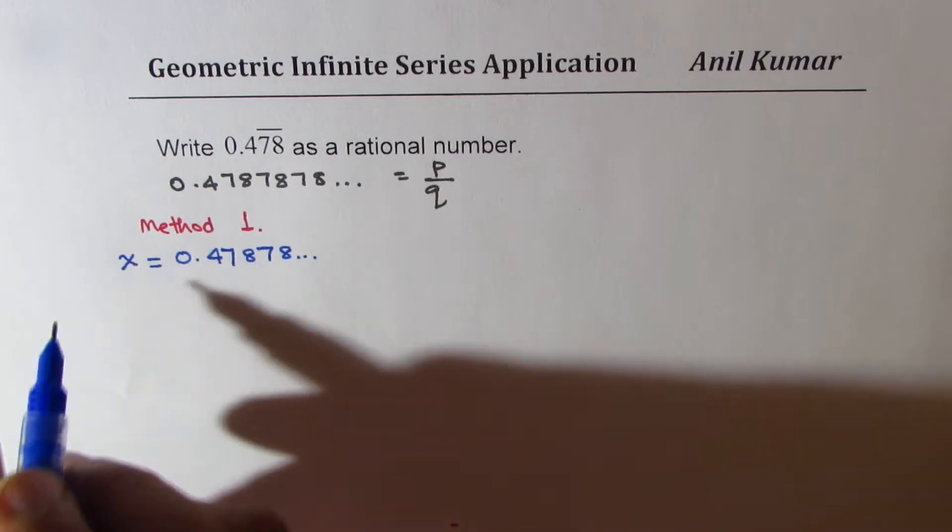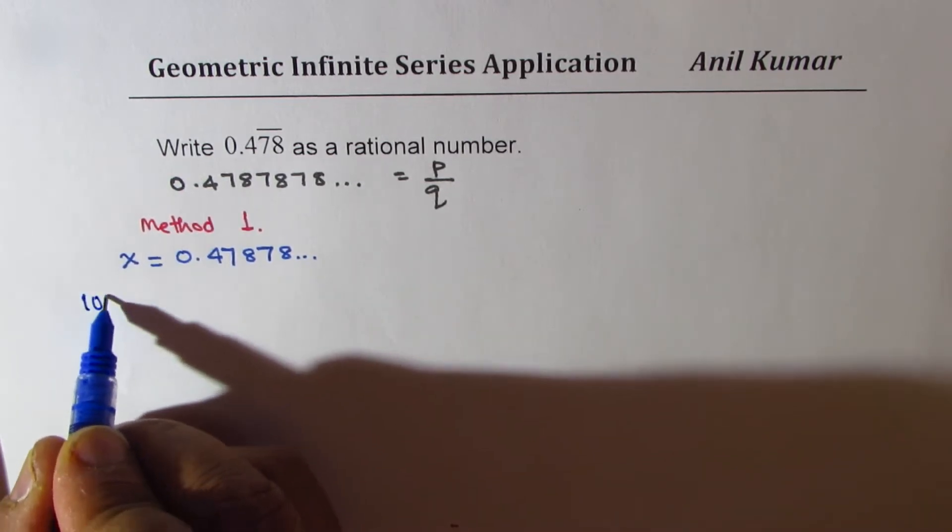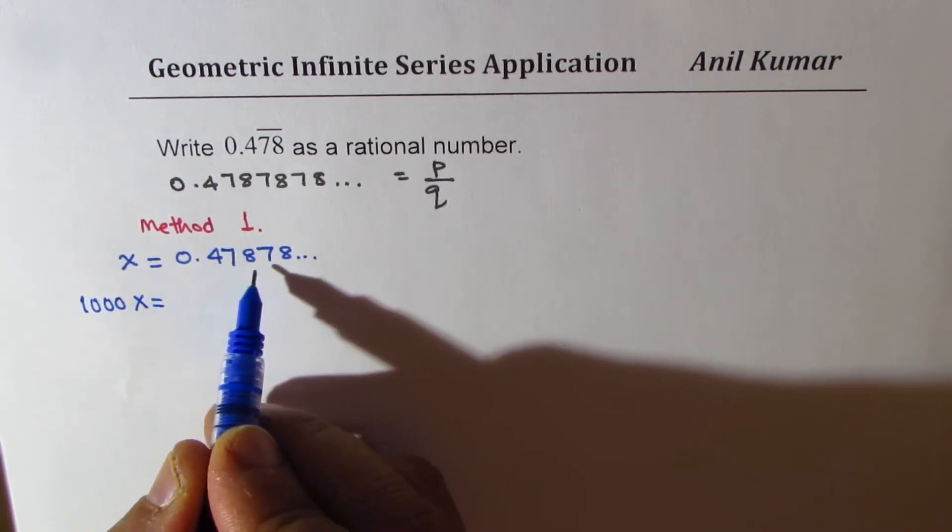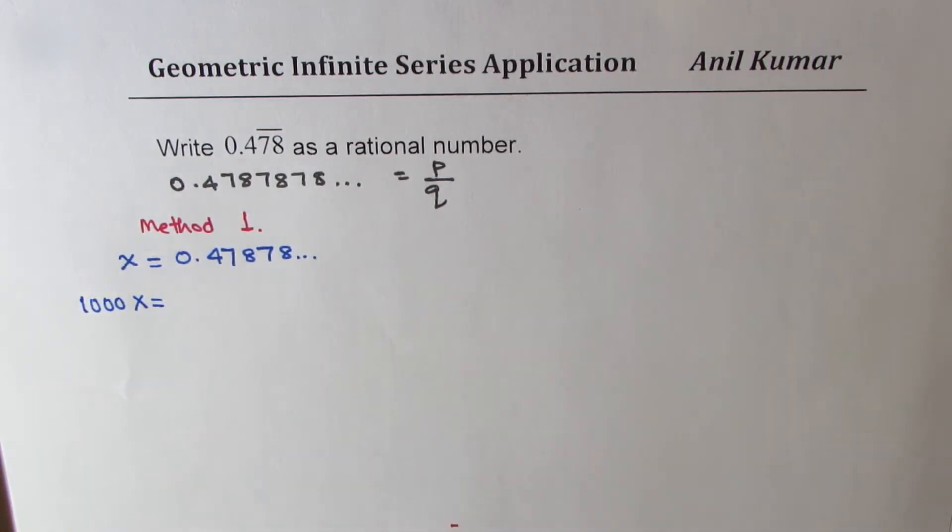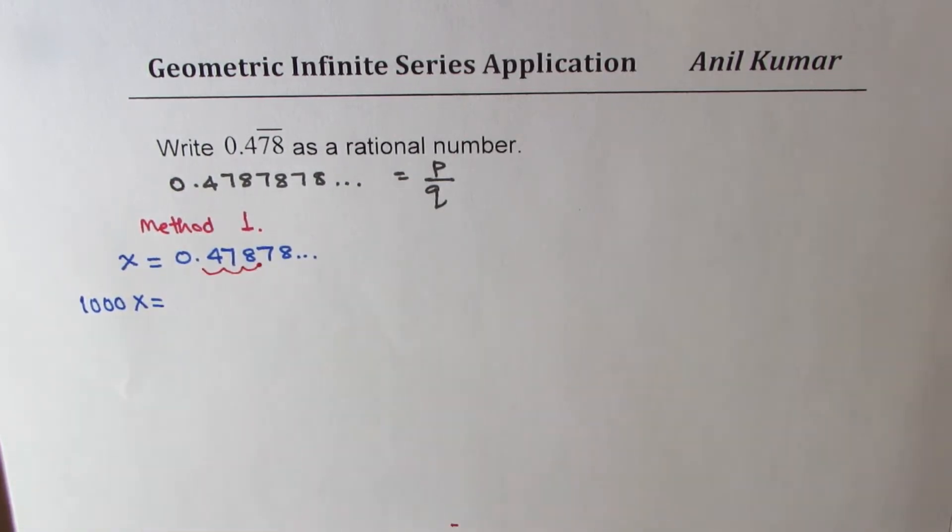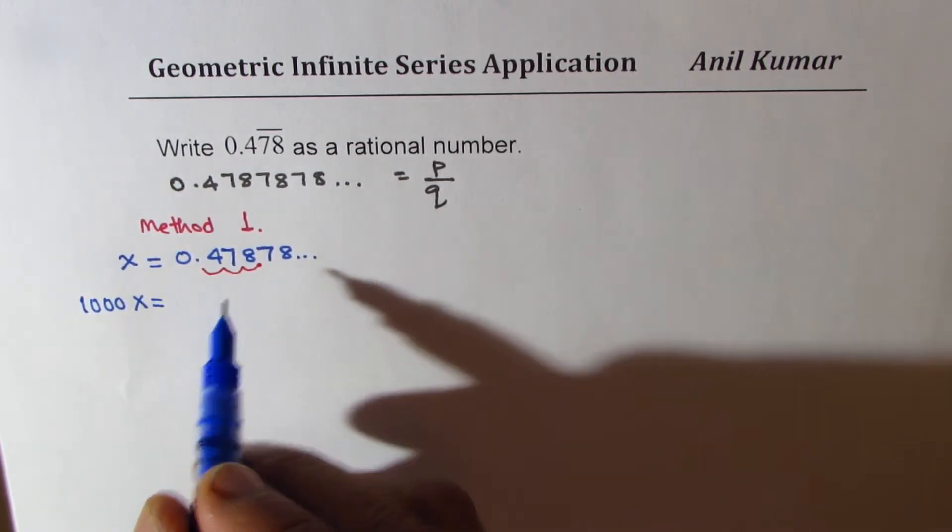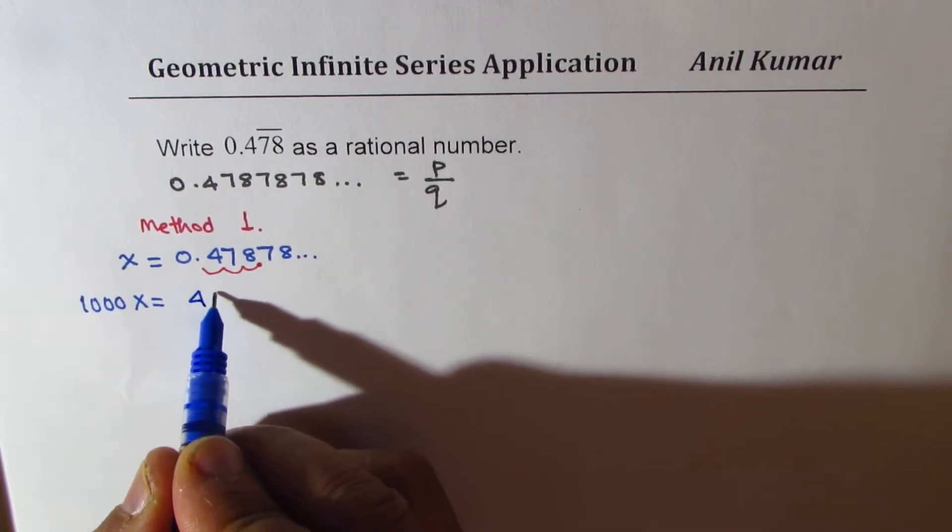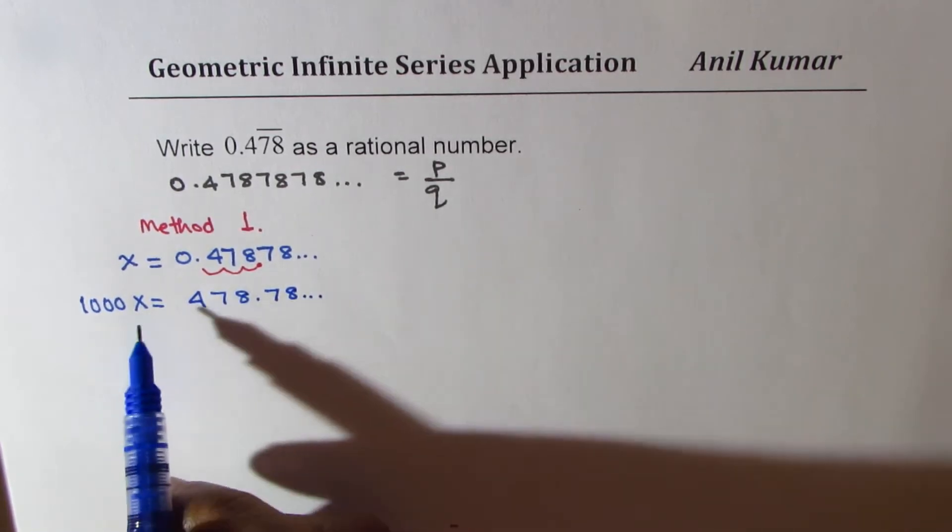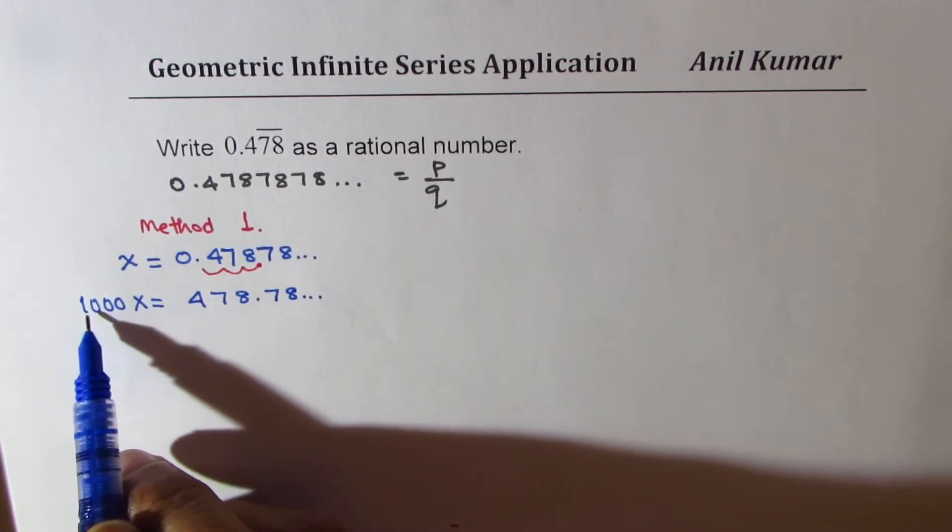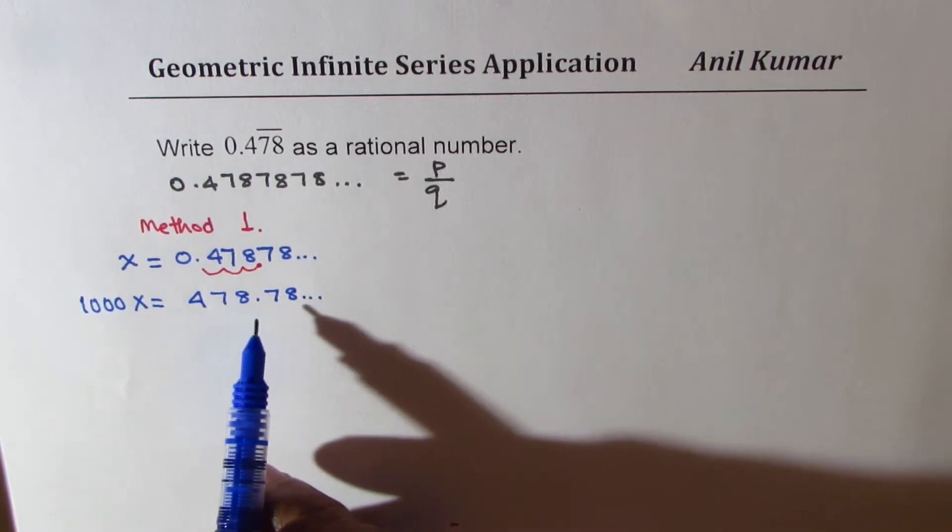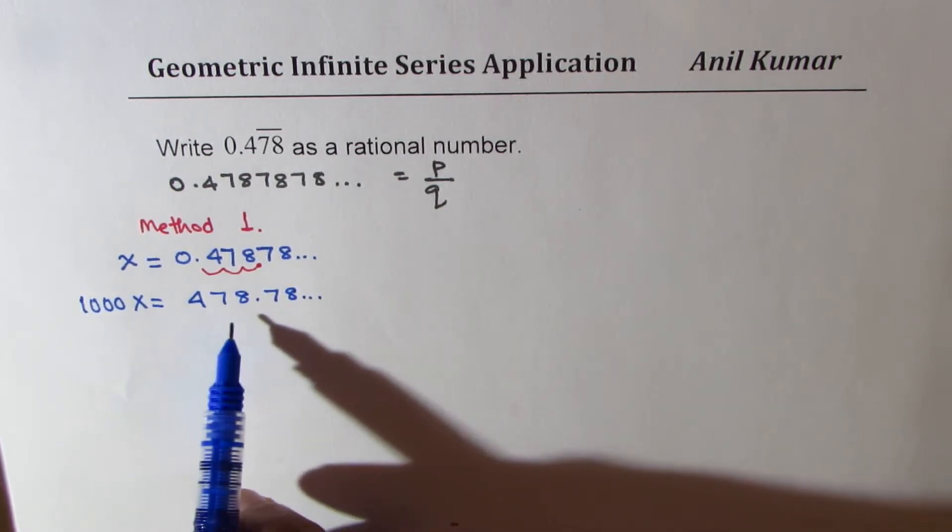In this particular case, the number 78 is repeating. So if I multiply this by 1000, the decimal moves three places. The number becomes 478.7878 recurring.